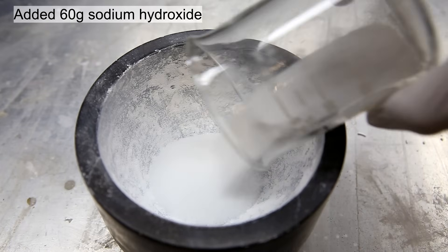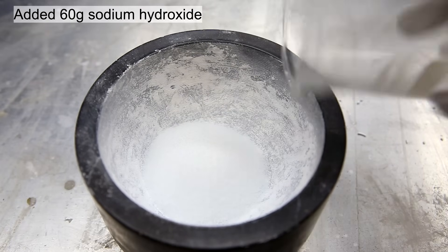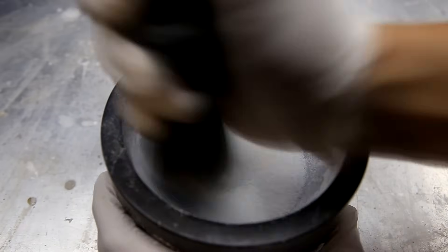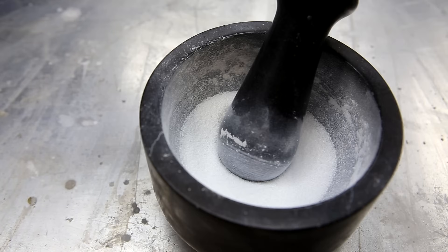Next to grind was 60 grams of sodium hydroxide beads. Here the mortar is much less full so it was a lot easier to grind. Eventually nearly powdered sodium hydroxide was obtained.